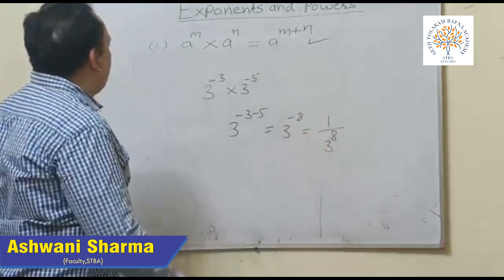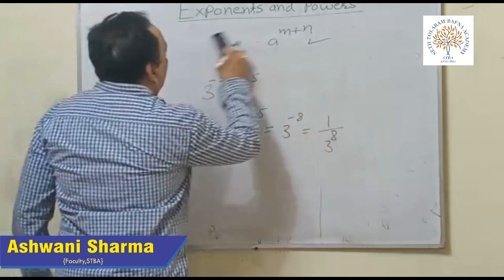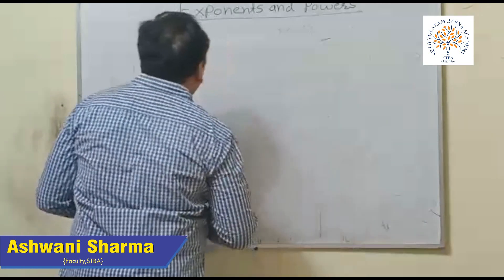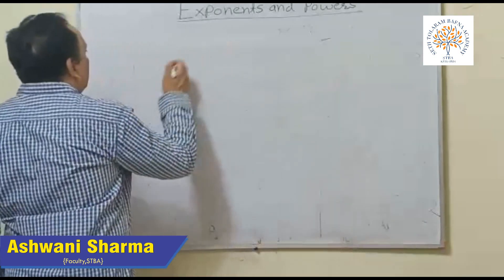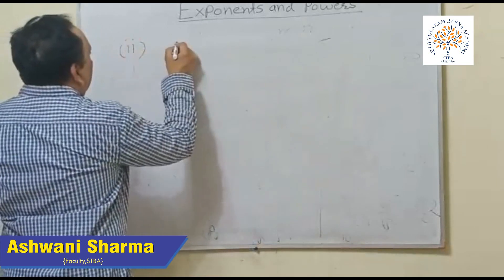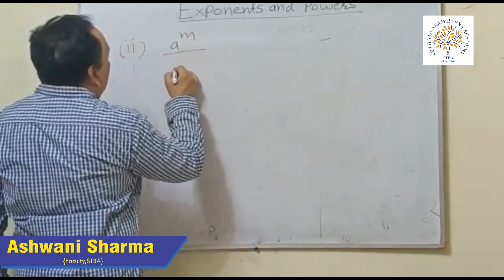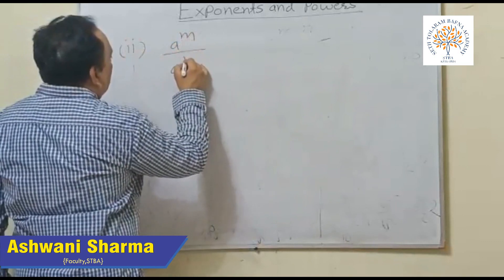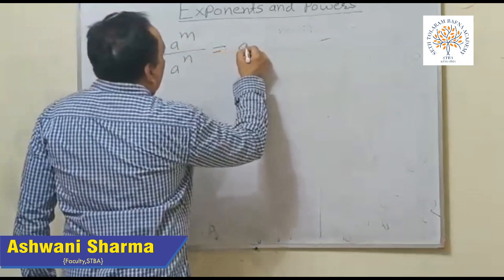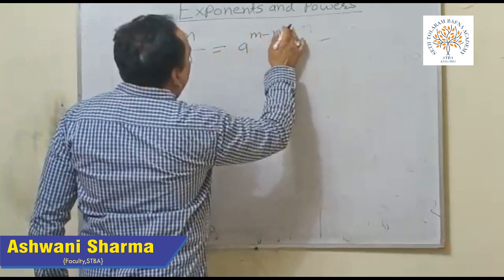Now we come to the second point: a raised to the power m upon a raised to the power n equals a raised to the power m minus n.